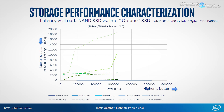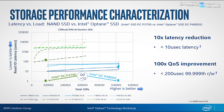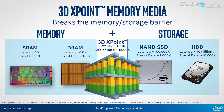The P4800X can be used as a supplement to system memory or as storage, configurable through Intel Memory Drive. Limitations apply: system memory expansion is not recommended to exceed eight times the installed DRAM, and each 375 gigabyte Optane SSD provides only 320 gigabytes of system memory expansion. It also appears only the AIC version is usable as system memory, not the U.2 version.